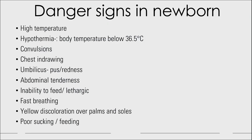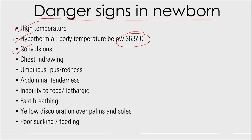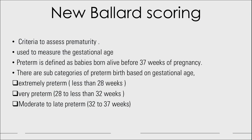Danger signs in the newborn include: high temperature, hypothermia (temperature below 36.5°C), convulsions, chest in-drawing, pus or redness in the umbilicus, abdominal tenderness, inability to feed or lethargy, fast breathing, yellow discoloration over palms and soles, and poor sucking and feeding.